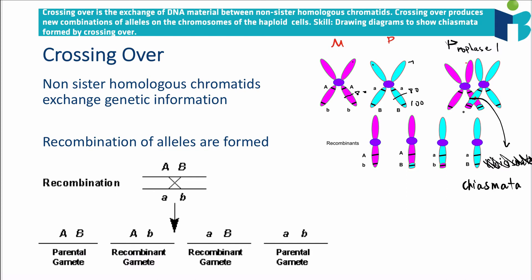When the chiasmata forms, genetic material is exchanged between non-sister chromatids, producing what we call recombinants — this is where the alleles are exchanged. The pink chromatid now has a little bit of blue attached to it, and the blue one has a little bit of pink. For example, a recessive B from the pink chromosome is transferred to the blue chromosome, which had a dominant B at that position.